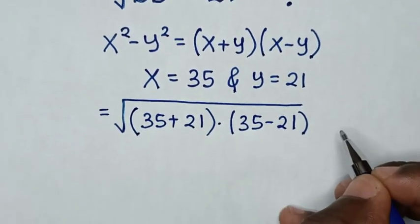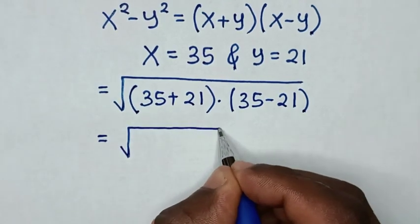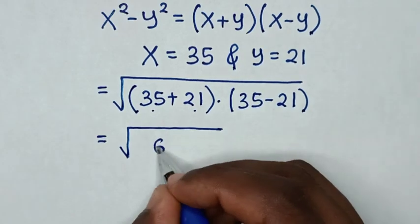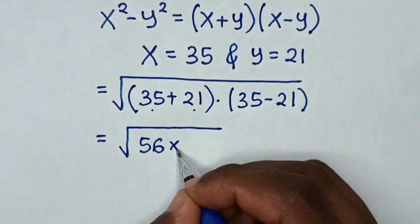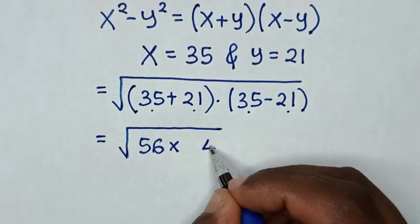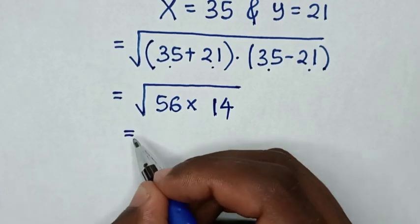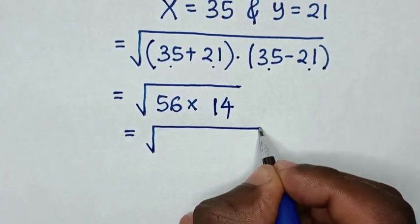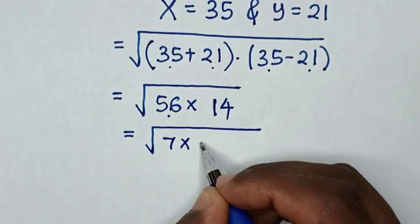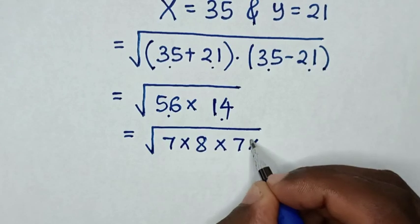Then it will be equal to square root of 35 plus 21, which is 56, times 35 minus 21, which is 14. Then it will be equal to square root of 56 — same as 7 times 8 — times 14, which is the same as 7 times 2.